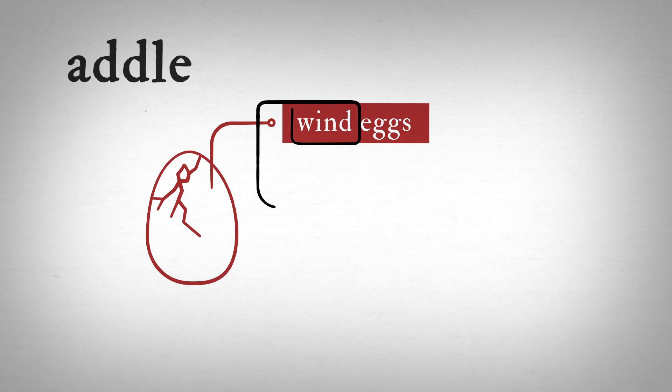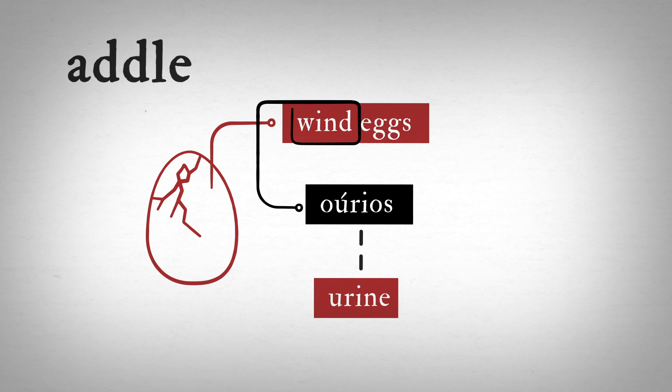The ancient Greek word for wind, urios, was similar to the word for urine, and some early Romans mistranslated the phrase into Latin as urine eggs, not exactly appetizing.